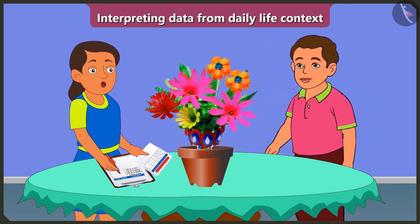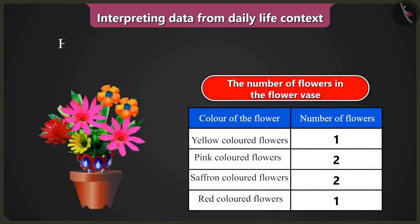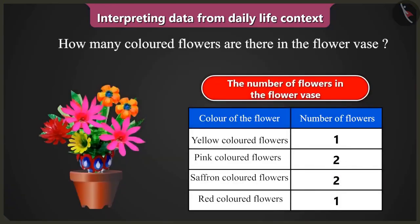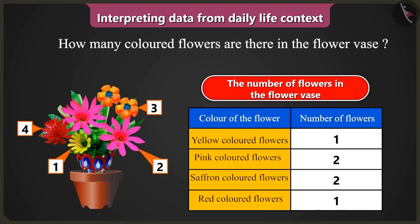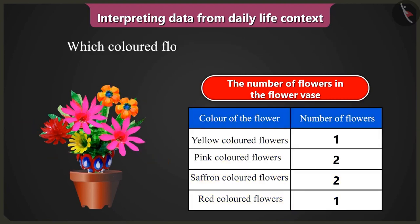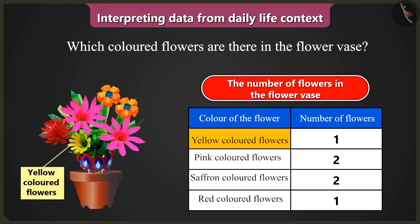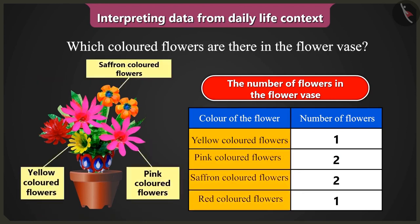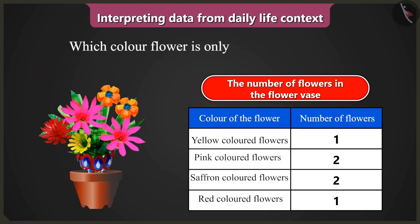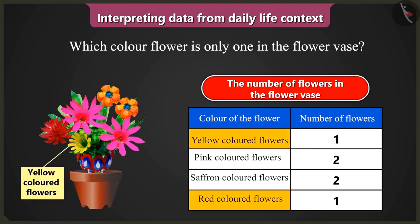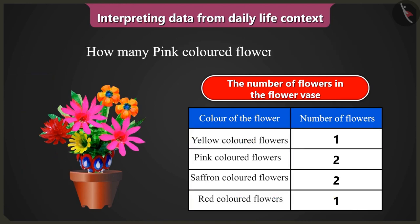Thank you Bunty. I will interpret the data from this table. So tell me, how many colored flowers are there? The table has data about flowers of four colors. Which colored flowers are there? There are yellow, pink, saffron and red colored flowers. Which color flower is only one in the vase? Yellow and red colored flowers are one each. How many pink colored flowers are there? There are two pink colored flowers.